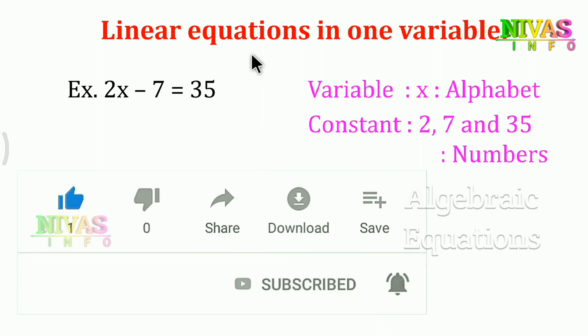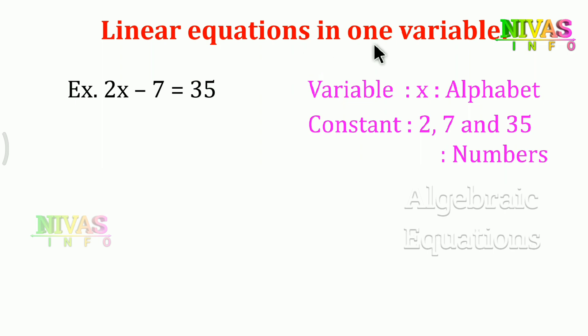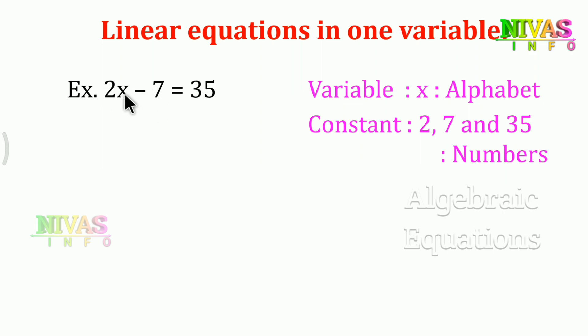Here we have linear equations in one variable — only one variable. The first equation has only a single variable. Now, the example with only one variable: 2x minus 7 is equal to 35. Here, the left side and the right side are equal. We have x as our variable, and we need to find the x value from the equation 2x minus 7 equals 35.